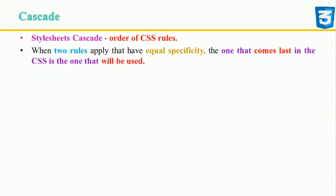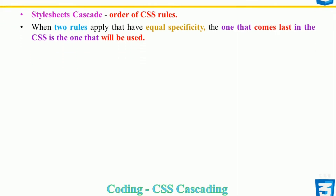Style sheet cascade is the order of CSS rules. When two CSS rules with equal specificity are applied, the one that comes last will be used. In this example, we have two rules that could be applied to an h1 element — the h1 ends up being colored blue because these rules have an identical selector and the same specificity, so the last one in the source order wins.